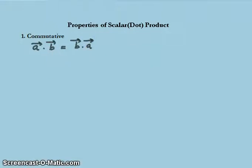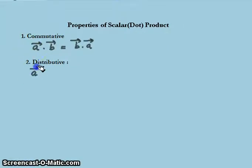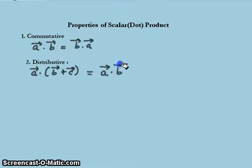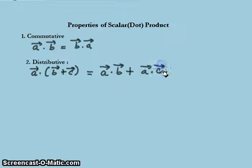The second property is that the scalar product is distributive — that is, vector a dotted with the sum of vectors b and c is equal to the dot product of a and b plus the dot product of a and c.